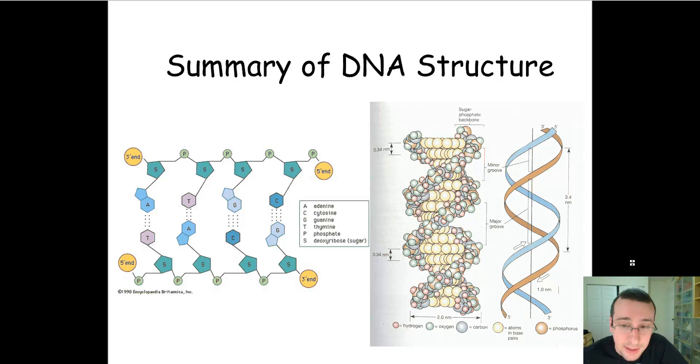Base pairing explains why it must be a double helix, why the width is constant, and also why the DNA twists and the shape. We know this because we saw a picture of the X-ray diffraction molecule.